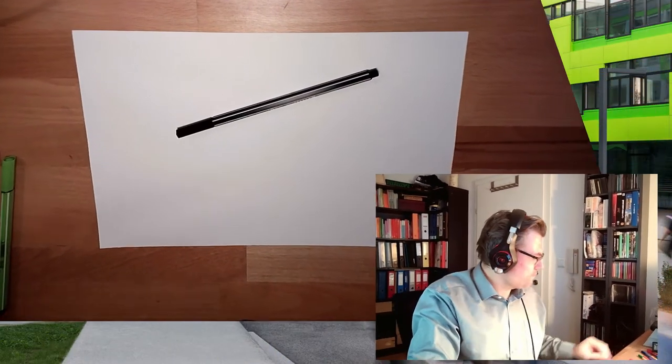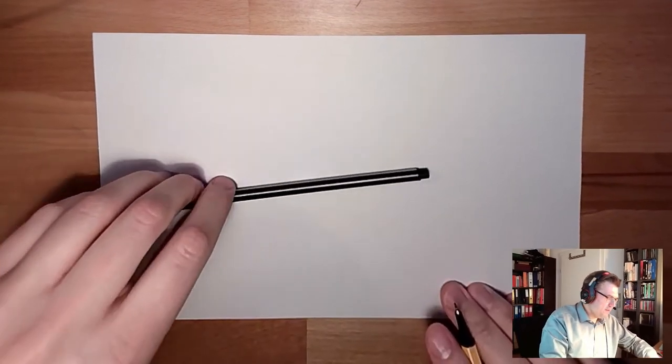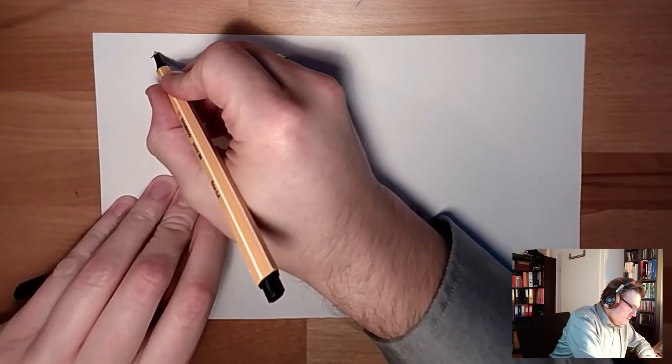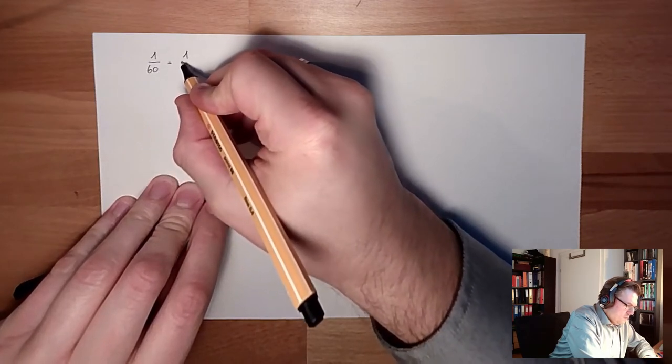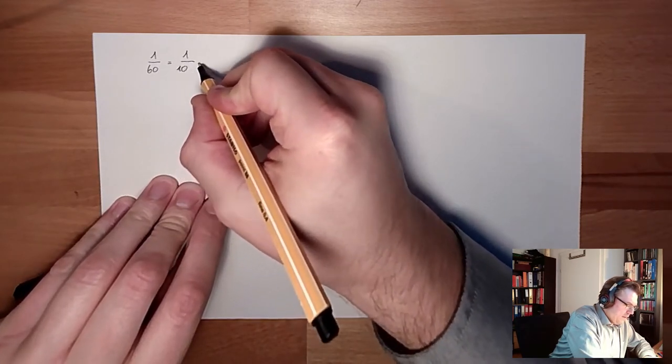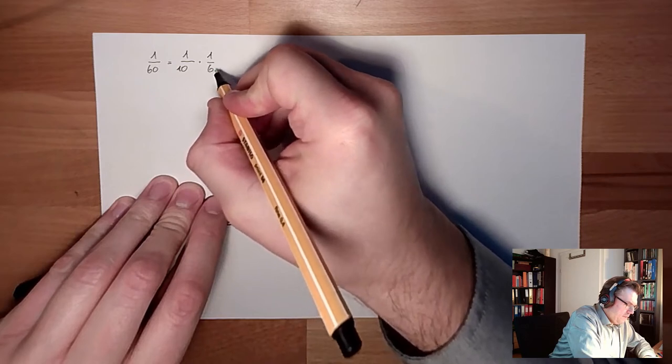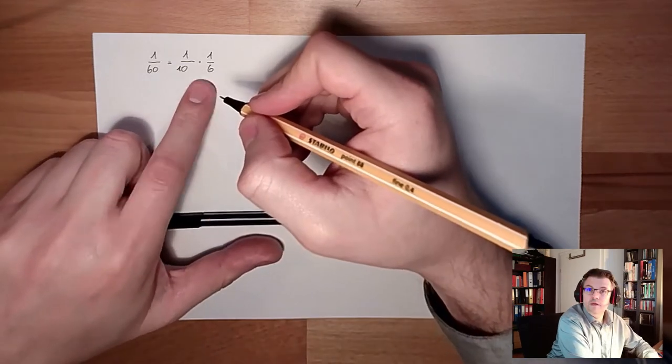So, how can we handle this? Well, let's think about what? 1/60th is 1 divided by 10 multiplied 1 divided by 6.